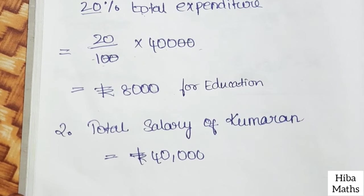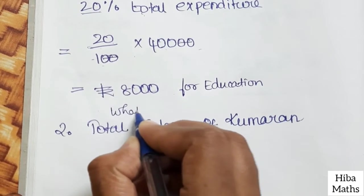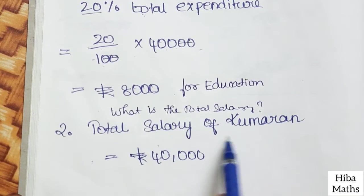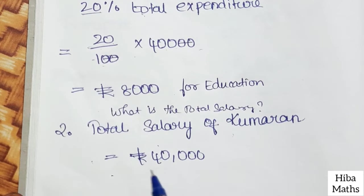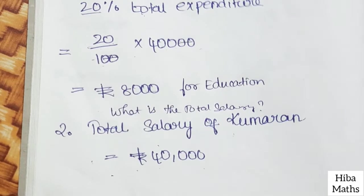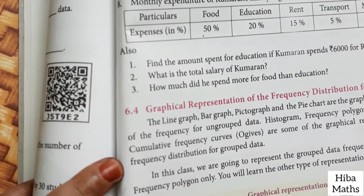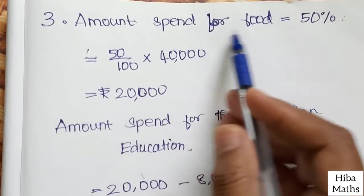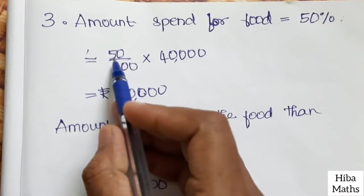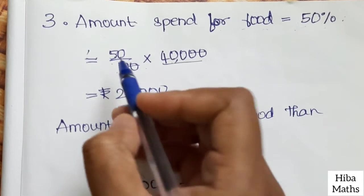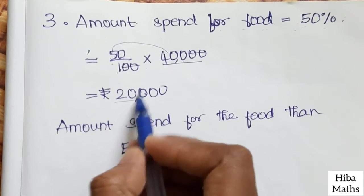The total salary of Kumaran is the total expenditure, which is Rs. 40,000. Amount spent for food is 50%, so 50 divided by 100 into 40,000 equals Rs. 20,000. The difference between food and education is Rs. 20,000 minus Rs. 8,000 equals Rs. 12,000.